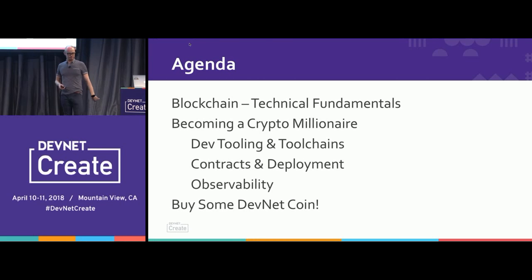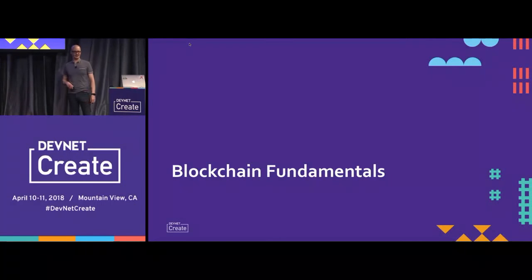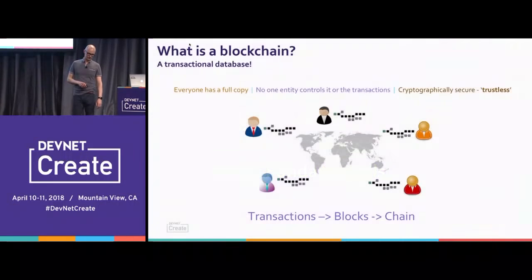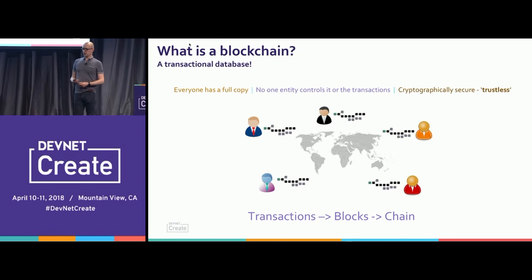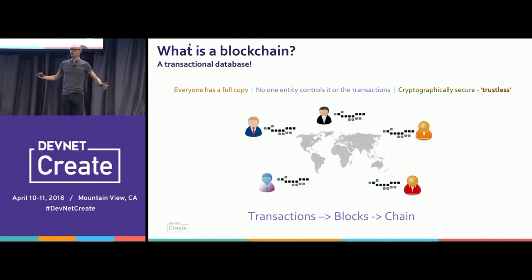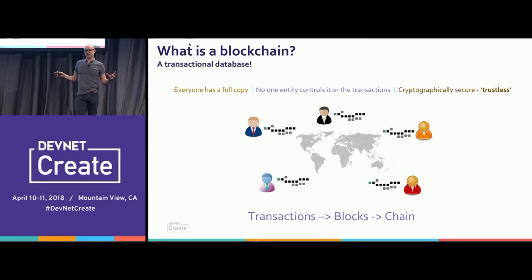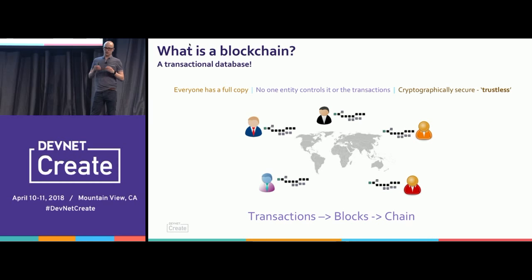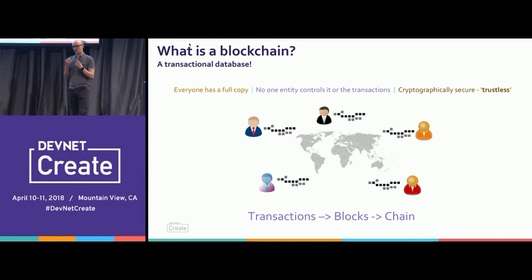If at any point you've got questions, I'm around for a couple of days. And then you get the opportunity to buy some DevNet coins, some tokens I'm going to create today for you. So let's go through the blockchain fundamentals. First of all, what is a blockchain? Blockchain is actually just a transactional database. When you join a blockchain, you get a full copy of that whole database. No one entity controls that blockchain. It's completely decentralized — not one entity has control over the transactions that go in it. We all put transactions into it and it self-governs. And it's cryptographically secure, and it's called a trustless network.